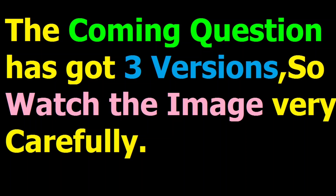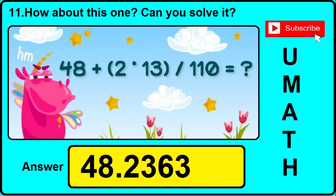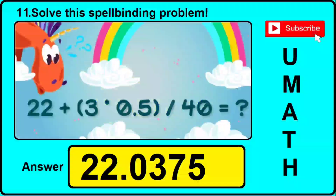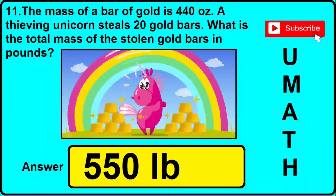Question number 11 also has 3 different versions. Read the question first, then watch the image. Version 1: 48 plus 2 multiply 13, close bracket, divided by 110 — the correct answer is 48.2363. Version 2: 22 plus 3 multiply 0.5, close bracket, divided by 40 — the correct answer is 22.0375. Version 3: the mass of a bar of gold is 440 oz; a thieving unicorn steals 20 gold bars — what is the total mass in pounds? The correct answer is 550 pounds.